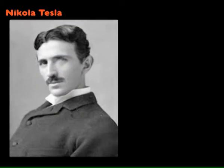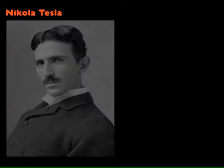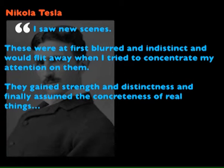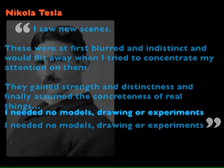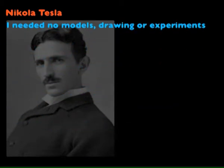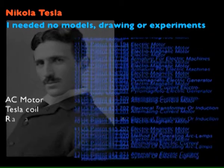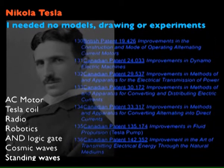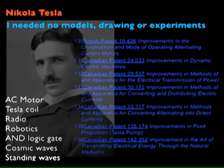Without any of Nikola Tesla's patents, he never made a calculation, never made a blueprint or diagrams. What he did was lie down on the couch at night, sometimes during the day: 'I saw new scenes, at first blurred and indistinct. They would flit away when I tried to concentrate. They gained strength and distinctness, and finally assumed the concreteness of real things. I needed no models, drawings or experiments.' This man took about 700 patents — the AC motor, the Tesla coil which is the basis of radio and television, robotics, the analogic gate, cosmic waves and standing waves. It's very difficult to imagine the world without his apocalypses.